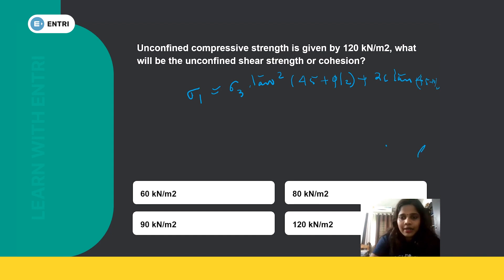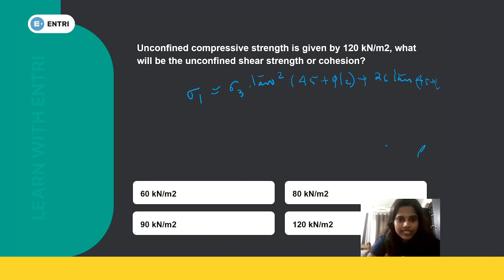In the UCC (Unconfined Compression) test, sigma 3 is equal to zero because there is no confining pressure. Sigma 1 at failure equals 2c times tan²(45 + phi/2) plus 2c tan(45 + phi/2). For an unconfined test, phi is taken as zero, so that simplification gives sigma 1 = 2c.